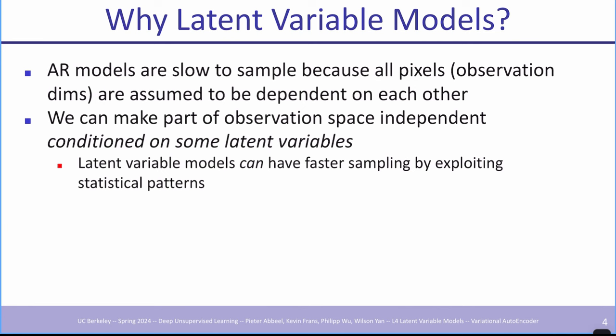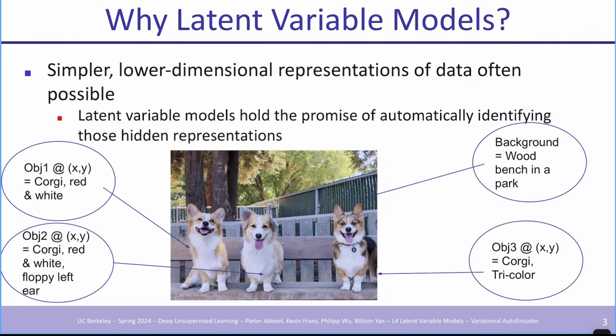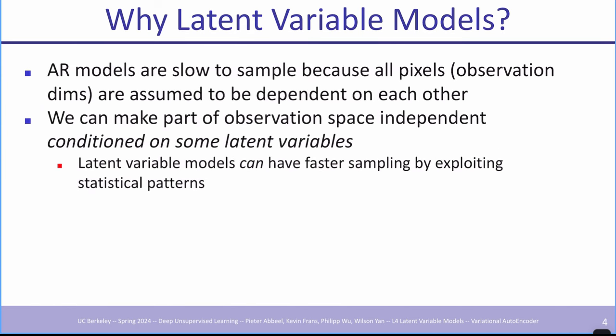Even if there are no true independencies across pixels, they could be conditionally independent given some side information — like a description of what's in the image. For example, exactly what the corgis look like could be independent of each other given that we know there are corgis in certain locations. If we can capture that latent structure, things can lead to better representations and faster sampling, because you just sample z and then generate the entire x without waiting for the previous pixel.